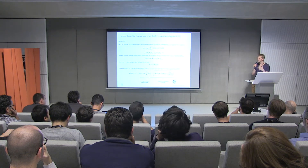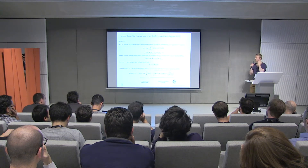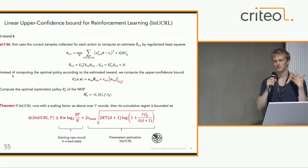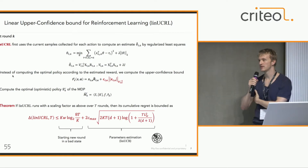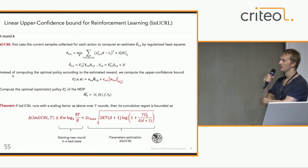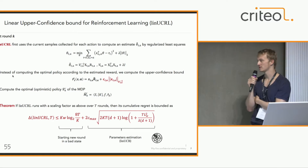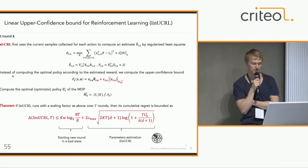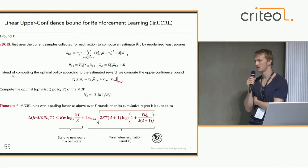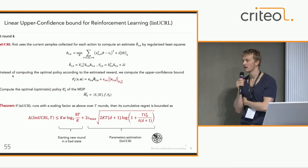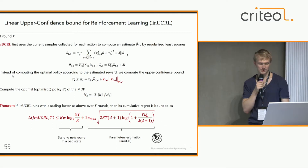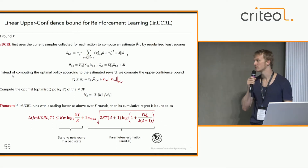We were able to prove that if we follow our policy with the right parameters and the right frequency of policy updates, we can achieve a regret bound that is only linear in the number of actions, whereas other policies could have exponential dependence.